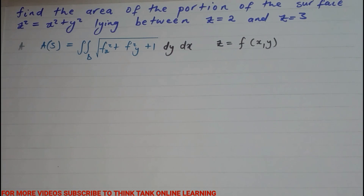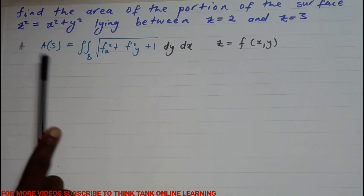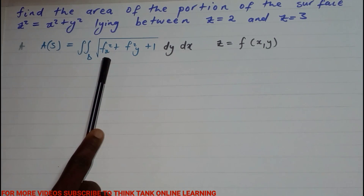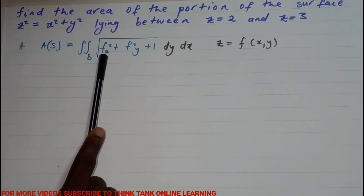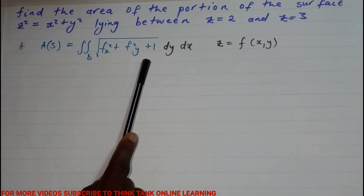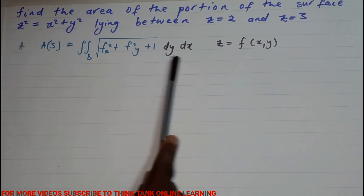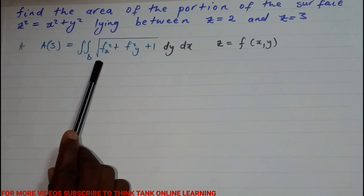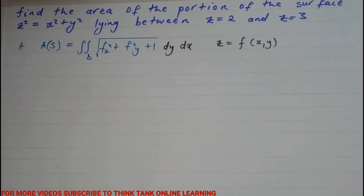There are many methods of solving this, but I'm going to show you two methods in this video. The first method uses the formula: the area of a surface is given by the double integral of the square root of (∂f/∂x)² + (∂f/∂y)² + 1, times dA, where f(x,y) is the equation of the surface.